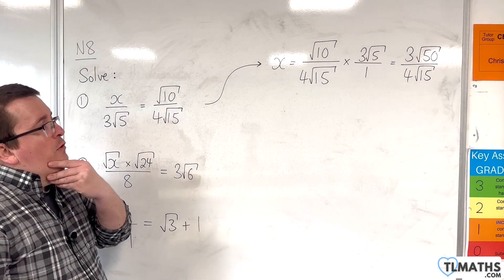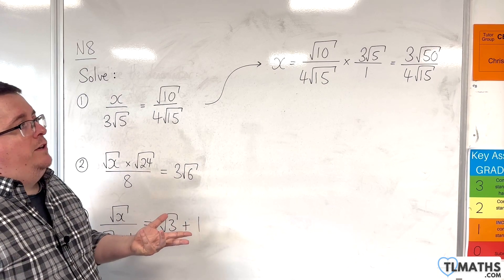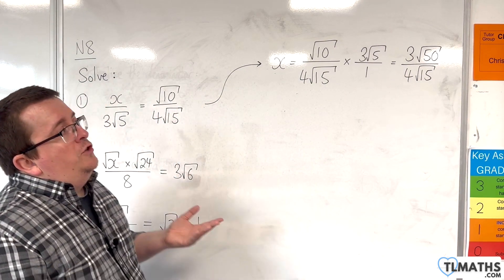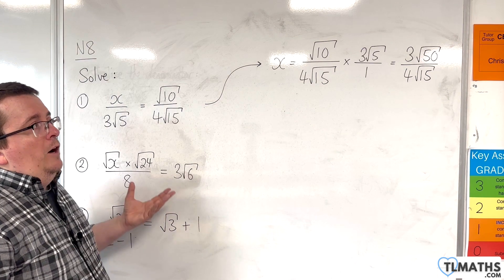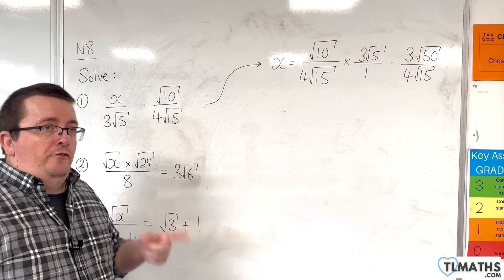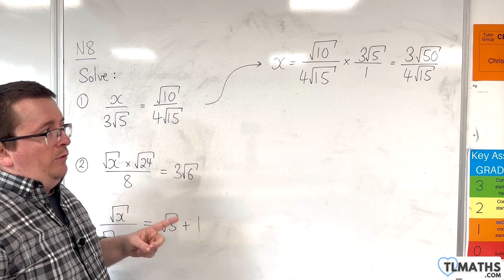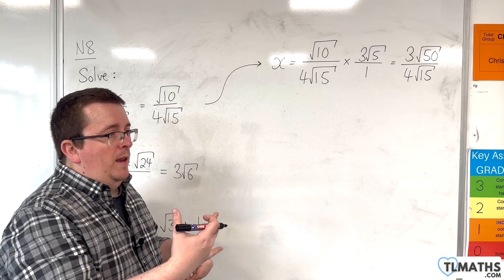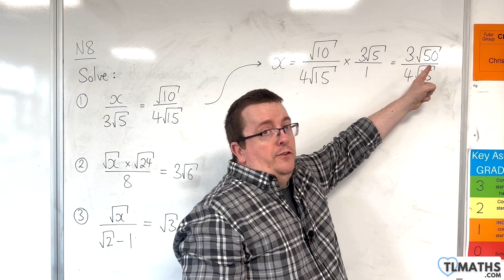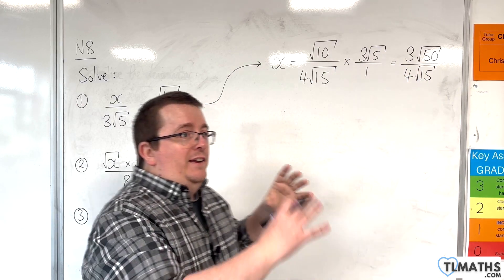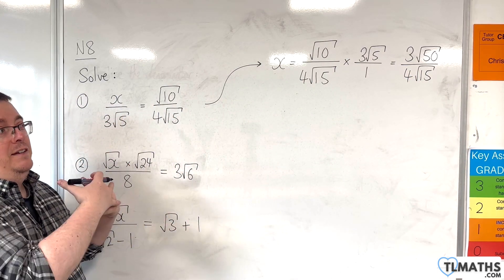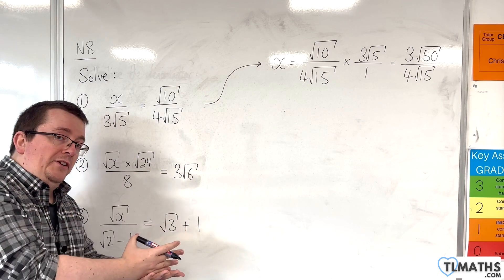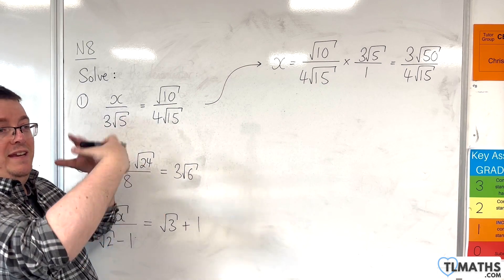I don't want to leave my answer like that — I'm going to rationalise the denominator. But before I do that, just to make my life a little bit easier, I'm going to simplify the √50 first. The reason is that in the next step I'm going to multiply top and bottom by √15, ending up with √50 times √15, which I'd then have to simplify. So it makes sense to simplify first before making what's underneath the square root larger.